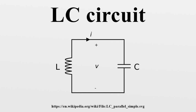The current will begin to charge the capacitor with a voltage of opposite polarity to its original charge. Due to Faraday's law, the EMF which drives the current is caused by a decrease in the magnetic field. Thus the energy required to charge the capacitor is extracted from the magnetic field. When the magnetic field is completely dissipated, the current will stop and the charge will again be stored in the capacitor with the opposite polarity as before. Then the cycle will begin again, with the current flowing in the opposite direction through the inductor. The charge flows back and forth between the plates of the capacitor through the inductor, and the energy oscillates back and forth between the capacitor and the inductor until internal resistance makes the oscillations die out.